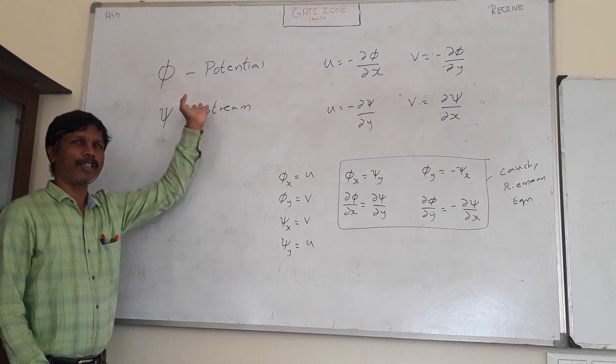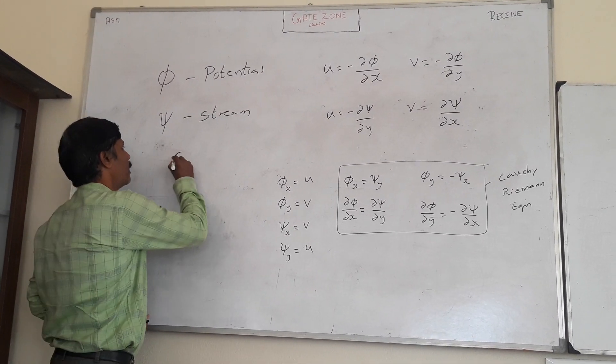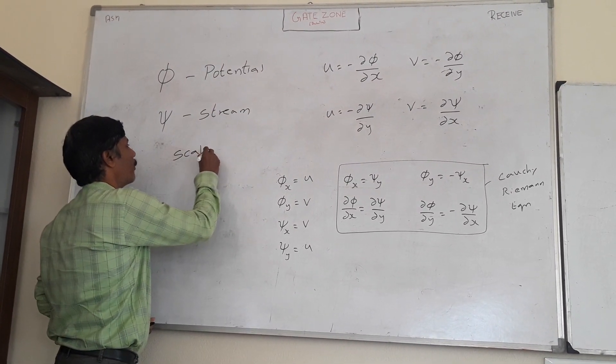Today we are having two different functions. One is phi and psi. Both are scalar point functions.